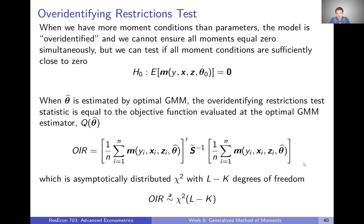We can calculate what this objective function is and the chi-squared critical value for our degrees of freedom — however many extra moments we have, basically — and then test whether the test statistic is relatively too large. If it is, we reject the null hypothesis and conclude that some of our moments don't equal zero, meaning some of our population moment conditions don't hold. If our population moment conditions don't hold, we're essentially saying our model is misspecified, and we can't be confident that our estimated parameters are consistent estimates of the true parameters.